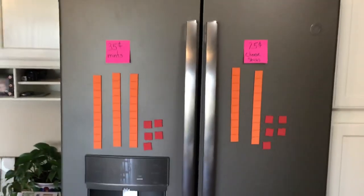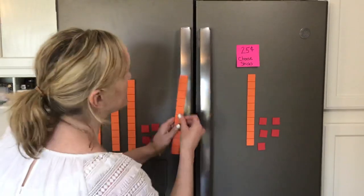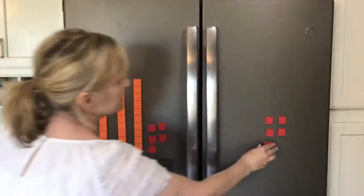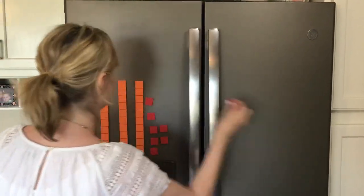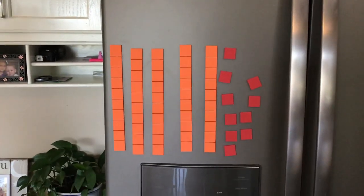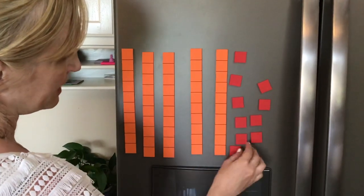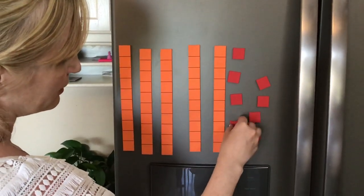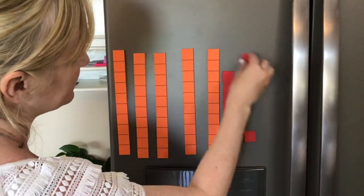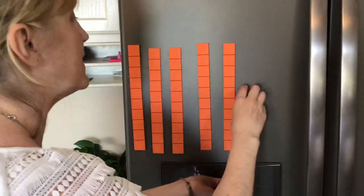I need to combine them to see how much it costs for both items. I'll take my tens and put them together, then bring my ones over as well. I'm going to see if I can do an exchange, because if you have 10 ones, you can exchange that for a base 10 block. I'll line it up to measure and count: 1, 2, 3, 4, 5, 6, 7, 8, 9, 10 ones — so I can exchange that for a base 10 block.